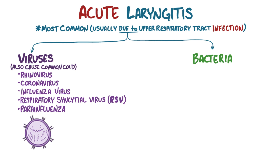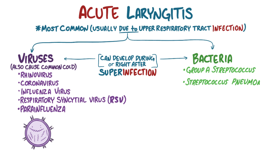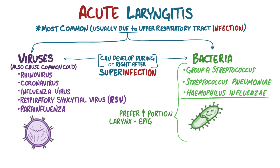Bacterial infections are another cause of acute laryngitis, and sometimes they can develop during or right after a viral infection — that's called a superinfection. Common bacterial causes include group A streptococcus, streptococcus pneumoniae, or haemophilus influenzae. These bacteria, and particularly haemophilus influenzae, have a special preference for the superior portion of the larynx and the epiglottis, causing epiglottitis.